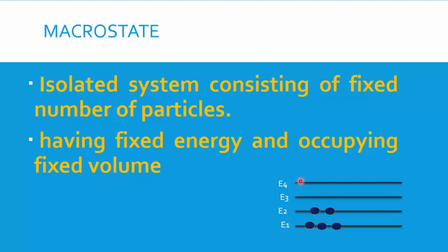For example, consider a container with many particles distributed into energy levels. Say three particles lie in energy level E1, two particles in energy level E2, one particle in energy level E3, and one in E4. You have the total number of particles fixed, total number of energy levels fixed, all enclosed in a container having volume V.